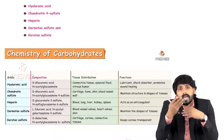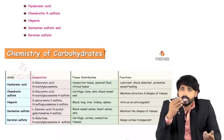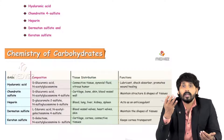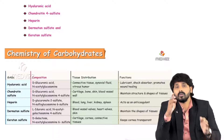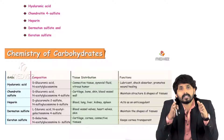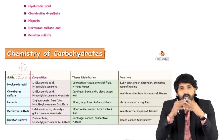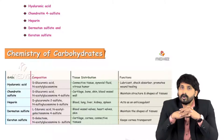The last one, keratan sulfate, is made up of galactose and N-acetylglucosamine 6-sulfate. It is present in cartilage, cornea, and connective tissues. Its main function is to keep the cornea transparent. These are all the important heteropolysaccharides with their biological functions and tissue distribution — and that concludes carbohydrate chemistry.